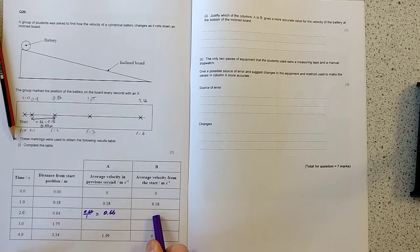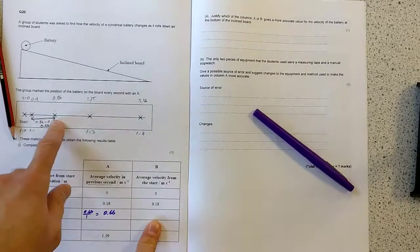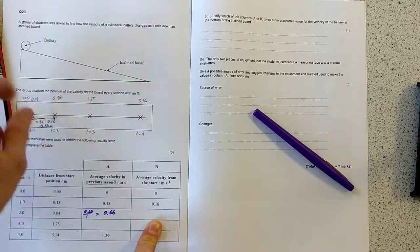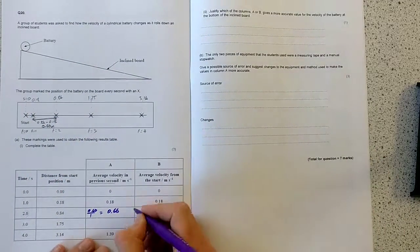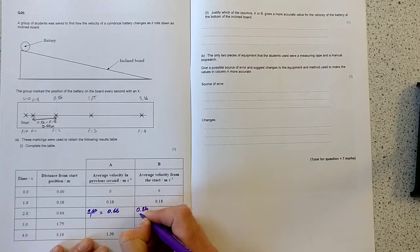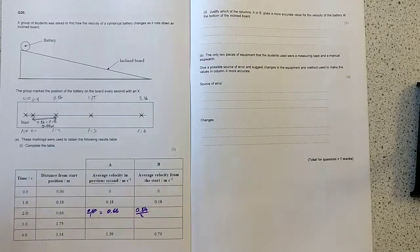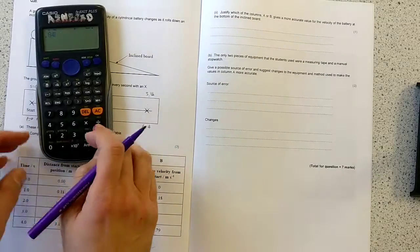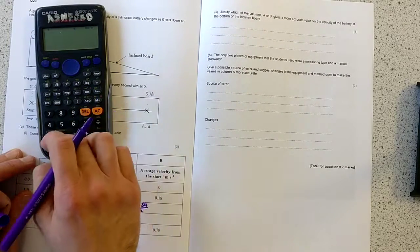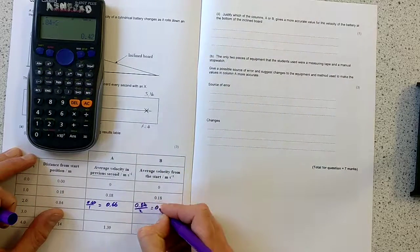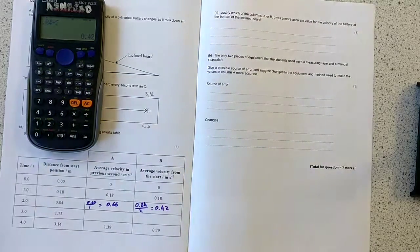Now, the average velocity from the start is going to be the distance travelled from the start, which was 0.84. So, here I'm going to do 0.84 divided by the time from the start, divided by 2. So, 0.84 divided by 2 is 0.42 metres per second.